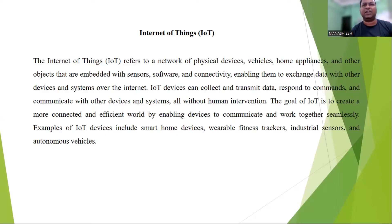By connecting devices to the internet we can create seamless interconnected networks that can be used to automate tasks, gather data, and improve the overall efficiency of our lives. For example, a smart thermostat could be connected to the internet and used to automatically adjust the temperature in a home based on the weather forecast and the homeowner's schedule.